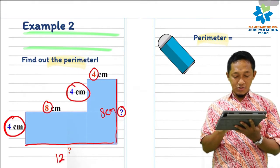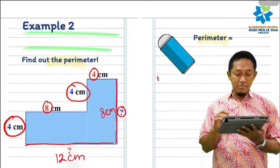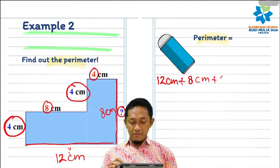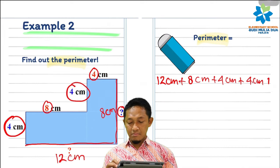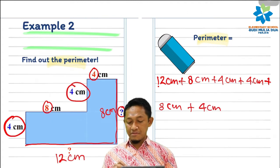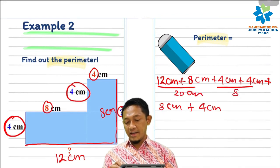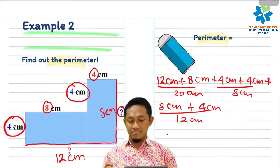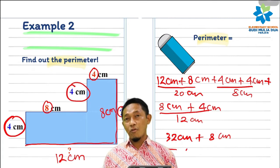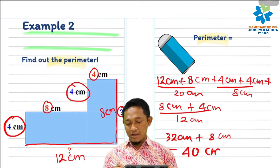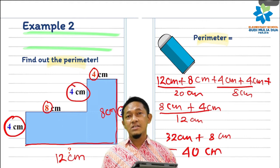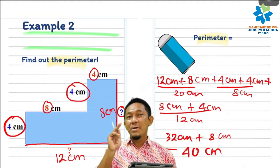So we can find out the perimeter: 12 cm plus 8 cm - the order doesn't matter - plus 4 cm plus 4 cm plus 8 cm plus 4 cm. 1, 2, 3, 4, 5, 6 sides. This is 20 cm, this is 8 cm, and this is 12 cm. 32 cm plus 8 cm, so the result is 40 cm. The perimeter of this irregular shape or polygon is 40 cm. Easy, right?